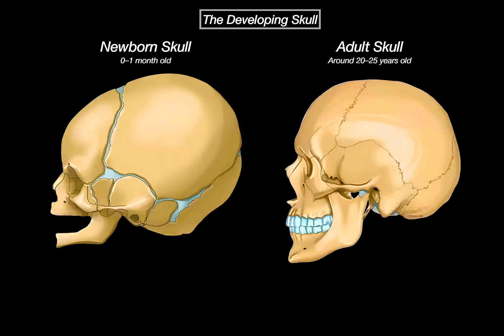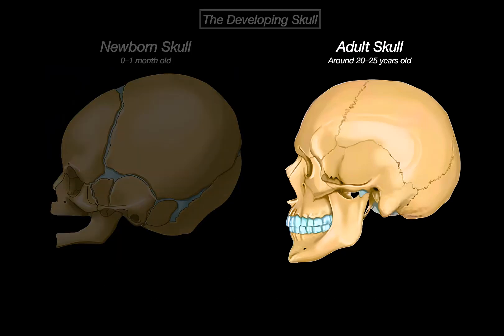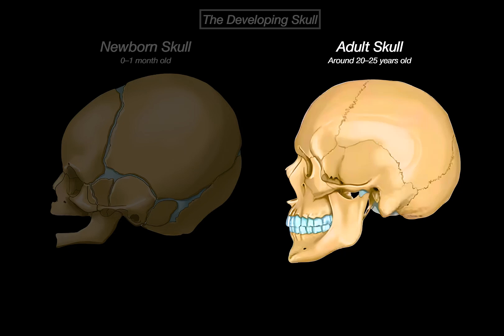Looking at the adult skull, you can see that all the fontanelles have closed and been replaced by sutures, which are immovable joints. These help stabilize the skull and fully protect the brain as growth slows down and eventually stops.